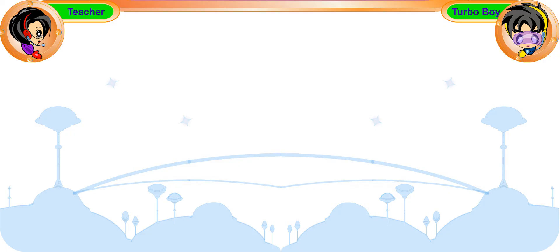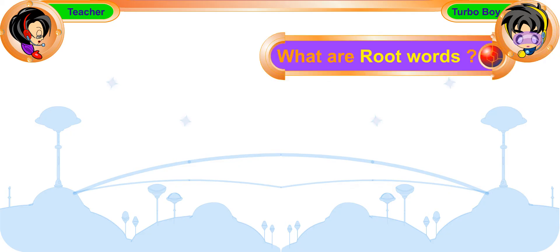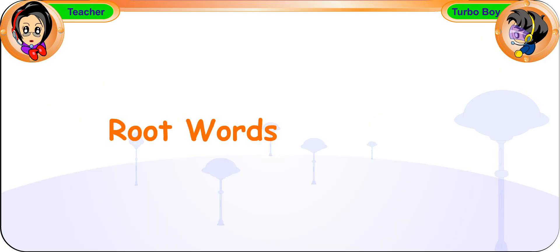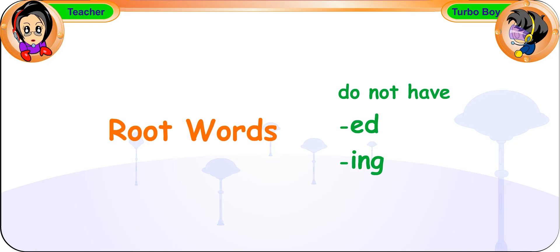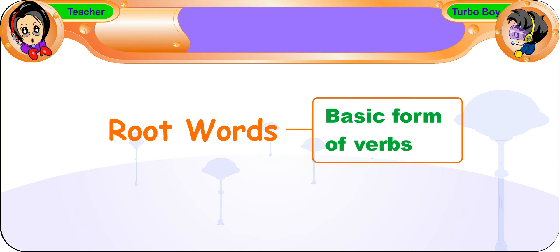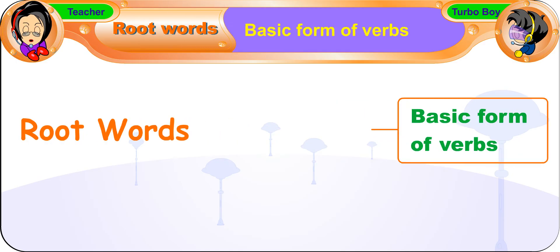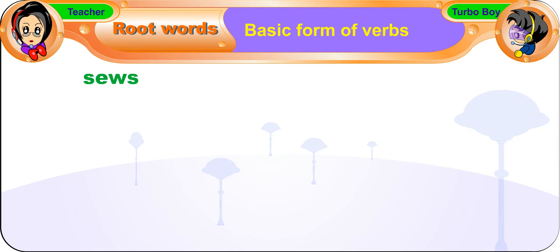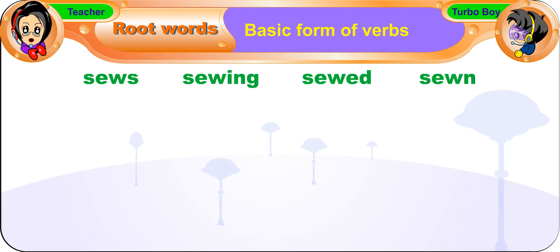No, teacher. What are root words? Root words are words that do not have any other word parts, such as 'ed' or 'ing' added to them. They are the basic form of verbs. For example, sows, sewing, sewed, and sewn are different forms of the verb 'sew.'